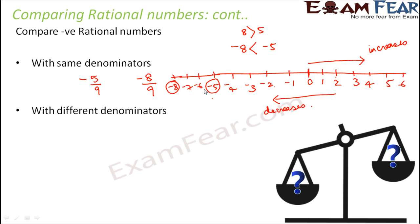A simple tip: whenever you compare rational numbers with negative signs, just do the reverse of what you'd do with positive signs. For example, comparing 8 and 5 with positive signs, 8 is greater. Since both carry a negative sign, you reverse — minus 8 is less than minus 5. So for minus 5 by 9 and minus 8 by 9, minus 5 by 9 is greater, because minus 5 is greater than minus 8.